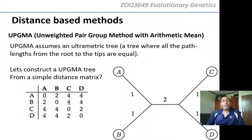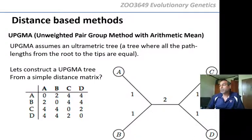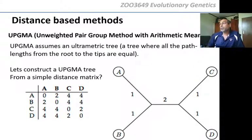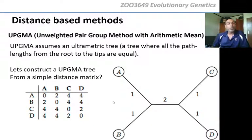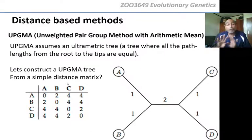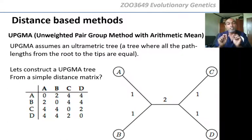This tree is unrooted because there is no outgroup — we don't know where the ancestor is. That is how you construct a tree using distance. Remember, there are no character states here, only distances. We look at the smallest distances first to make the initial groupings, then the bigger distances to link the groups. There's no 'these two have brown eyes, let's put them together' — it's only measurements between different groups.